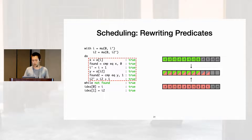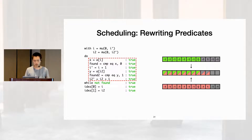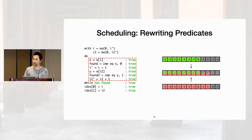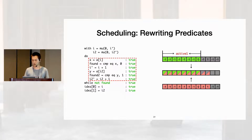Because the loops may have different trip counts at runtime, naively fusing them would likely skip execution of some required instructions or execute others when they shouldn't be — for example, instructions with side effects. To deal with this, we rewrite the predicates of these instructions so that they only execute when they're supposed to.